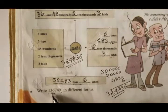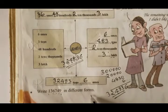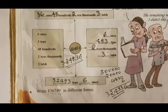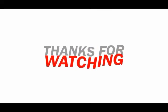1,000 — at 36,749 in different form. This is how you can do different form. Thanks. Thank you.